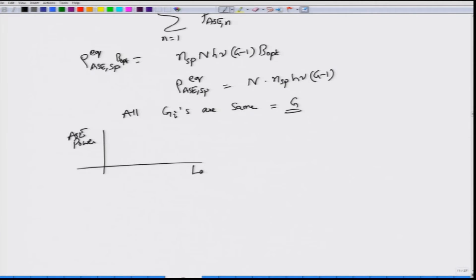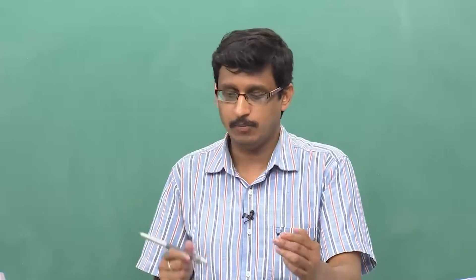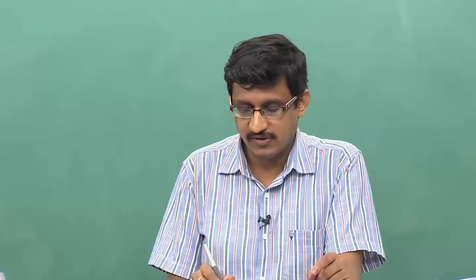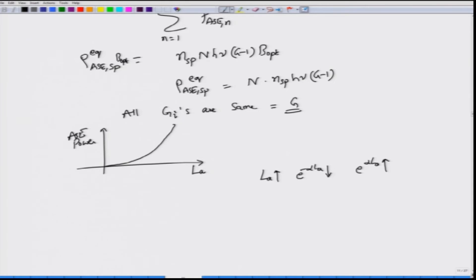There is an additional effect regarding amplifier spacing L_a: as L_a increases, e^(−α·L_a) decreases, so each amplifier's gain G = e^(α·L_a) must increase to compensate. As a result, the total ASE noise power grows exponentially with amplifier spacing. So increasing L_a to reduce the number of amplifiers actually makes the ASE noise worse.